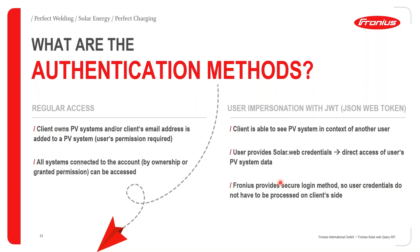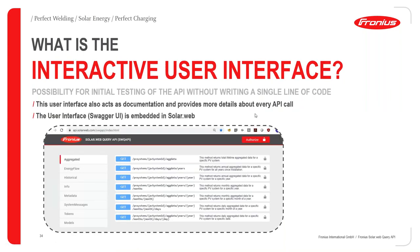The user provides SolarWeb credentials which allow direct access to PV system data, with Fronius providing a secure login method so user credentials are not processed on the client's side. The Swagger UI (user interface) is a third-party platform that allows initial API testing without writing any code. It also acts as documentation, providing details about every API call. The Swagger UI link is embedded in SolarWeb and will be shared during the presentation.